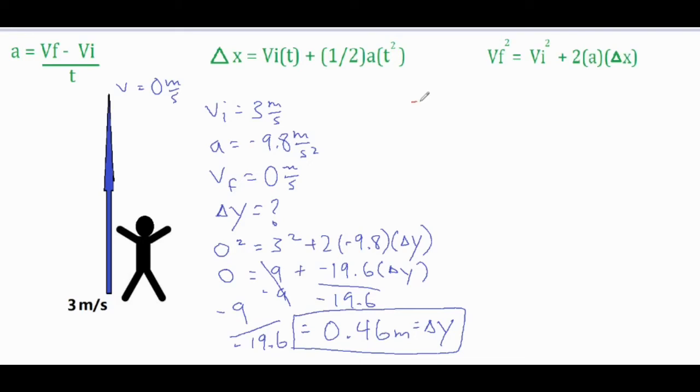If I do that, I get acceleration of negative 9.8 equals the VF of 0 minus VI over T. If we solve for T, we can go ahead and cross multiply these two, which is basically the same thing as multiplying both sides by T and then dividing both sides by negative 9.8. Either way, these two are going to switch spots and then the T is going to end up being 0.31 seconds.